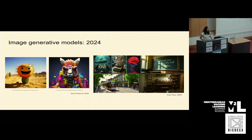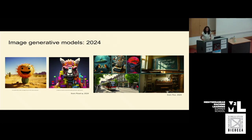We can also see how these models are able to generate images with different styles. And even more recently, the most recent models show that quality has been boosted even farther. We have models that not only yield very high-quality images, but these images are also consistent with the input prompt — for example, the alpaca made of colorful building blocks, cyberpunk style.